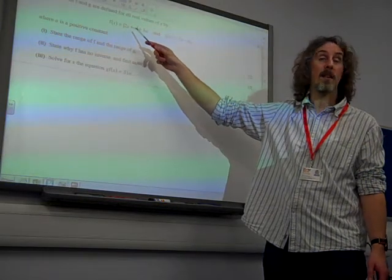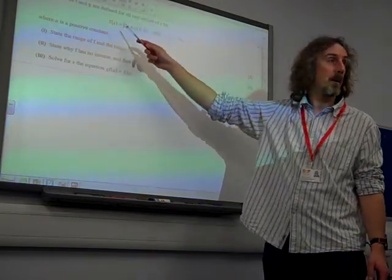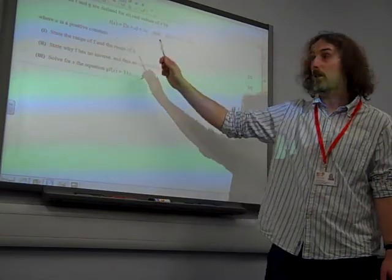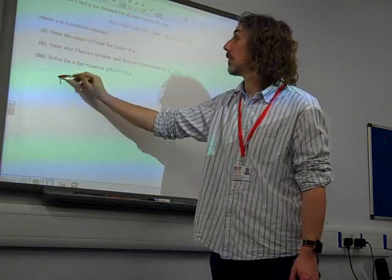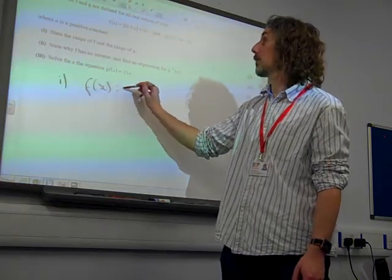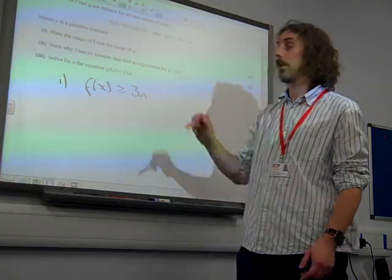So the whole thing, the smallest that anything could possibly be, is 3a. So f of x is greater than or equal to 3a.